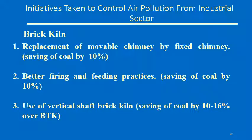Initiatives for controlling air pollution from the industrial sector include the brick kiln sector, which is extensively used in real estate. Control strategies are: replacement of movable chimney by a fixed chimney, saving coal by 10%; better firing and feeding practices, saving coal usage by about 10%; and the usage of vertical shaft brick kiln, which can save coal usage by 10 to 16%.